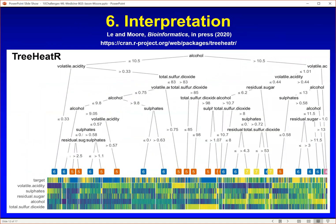We're also very interested in interpretation — this is perhaps one of the most challenging areas of machine learning. This is work done by my postdoc Trang Lee. This is an R package we developed called Tree Heater, which combines heat maps for visualizing features and outcomes with machine learning models so that you can get a much better idea about what's going on in the model itself.